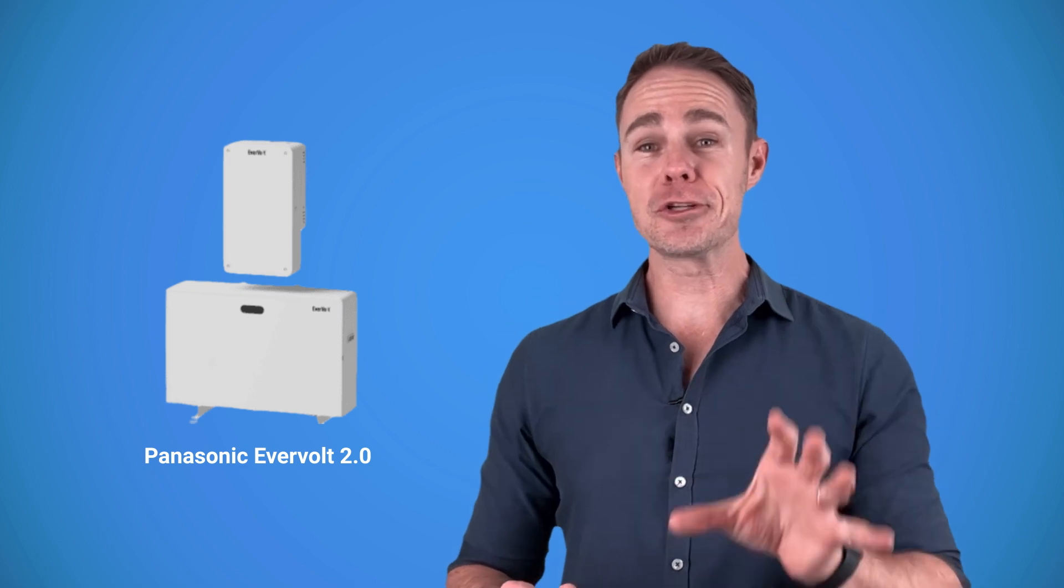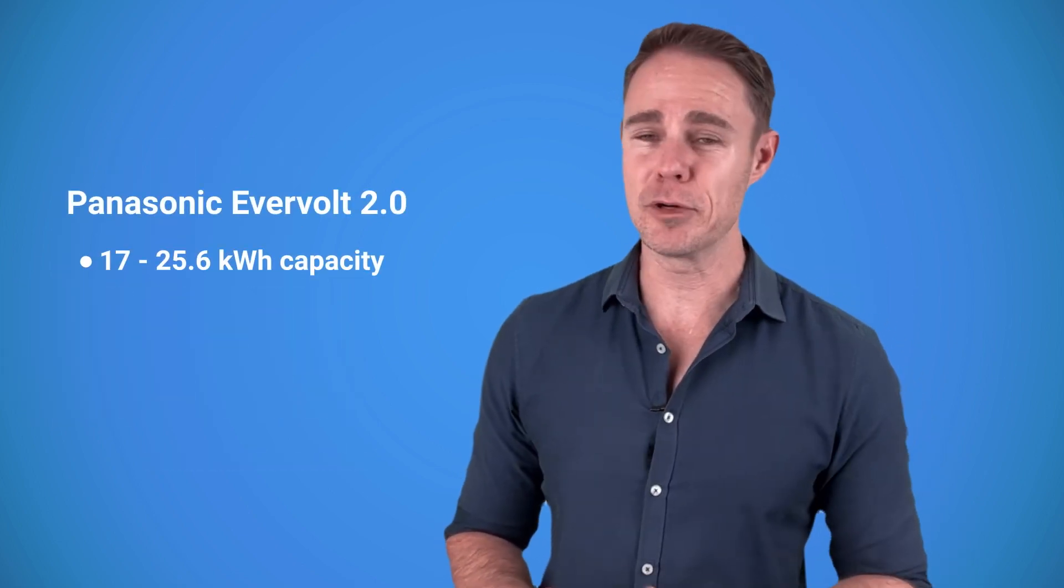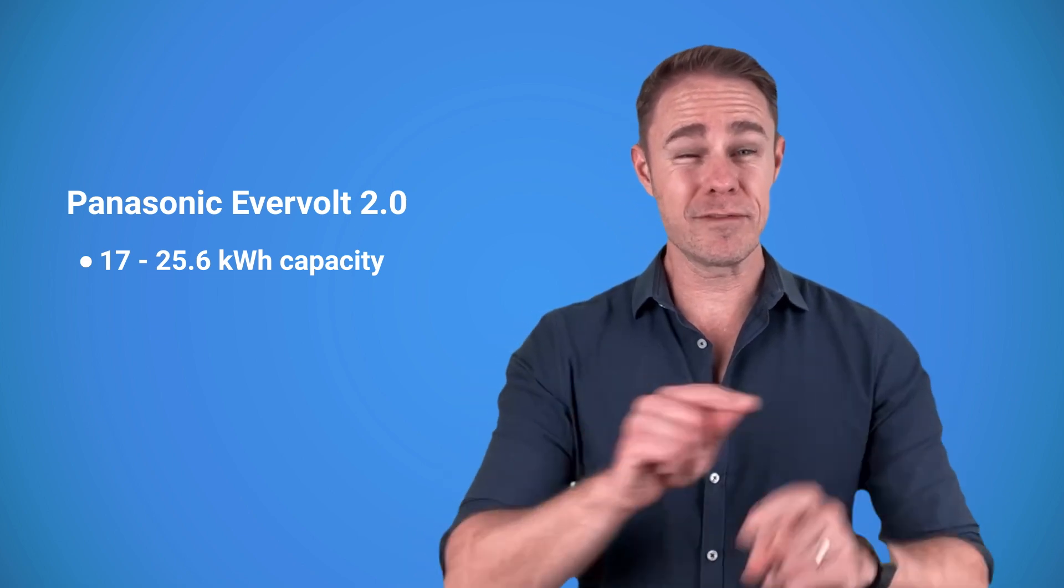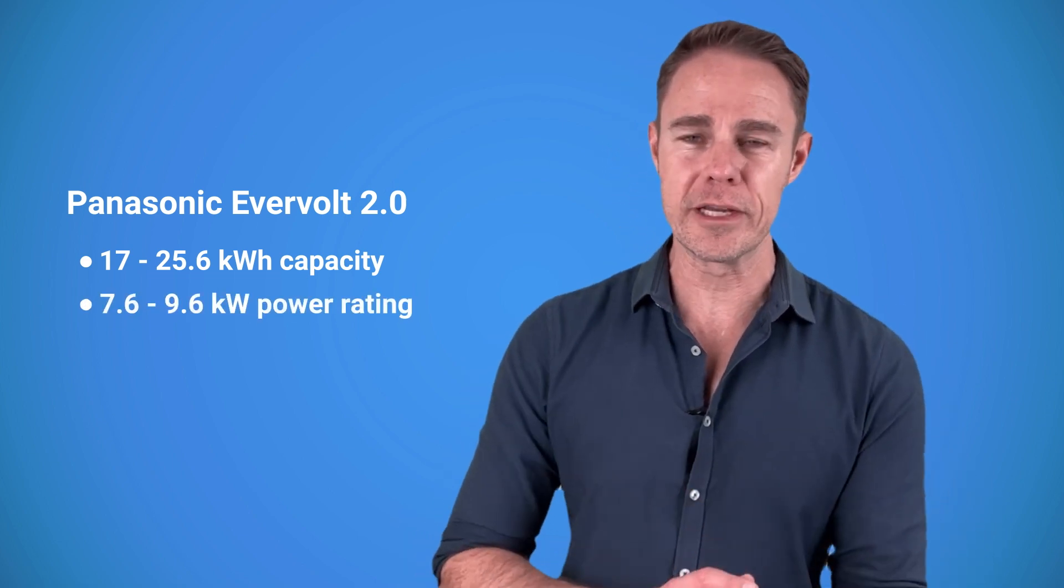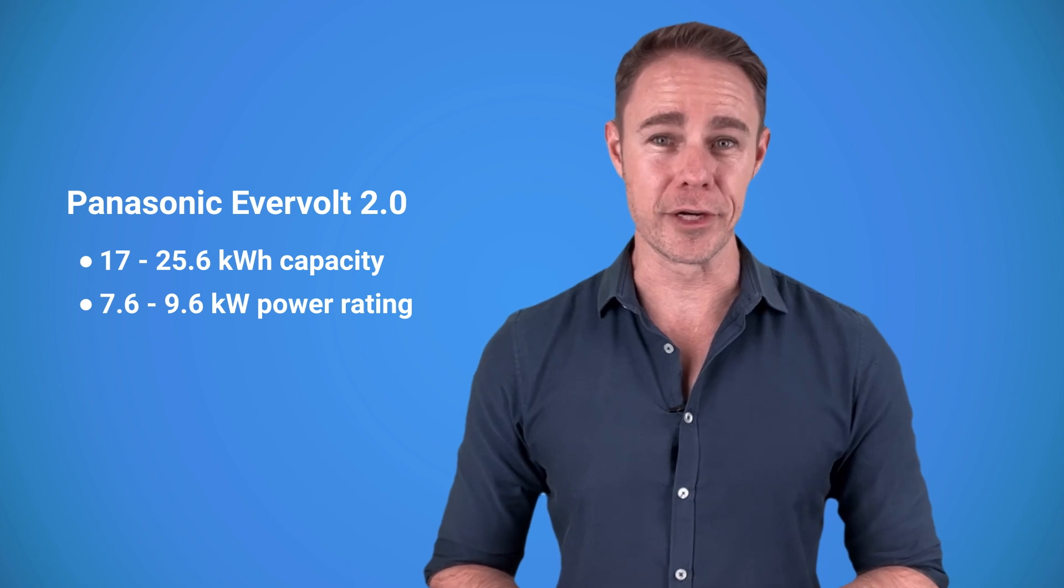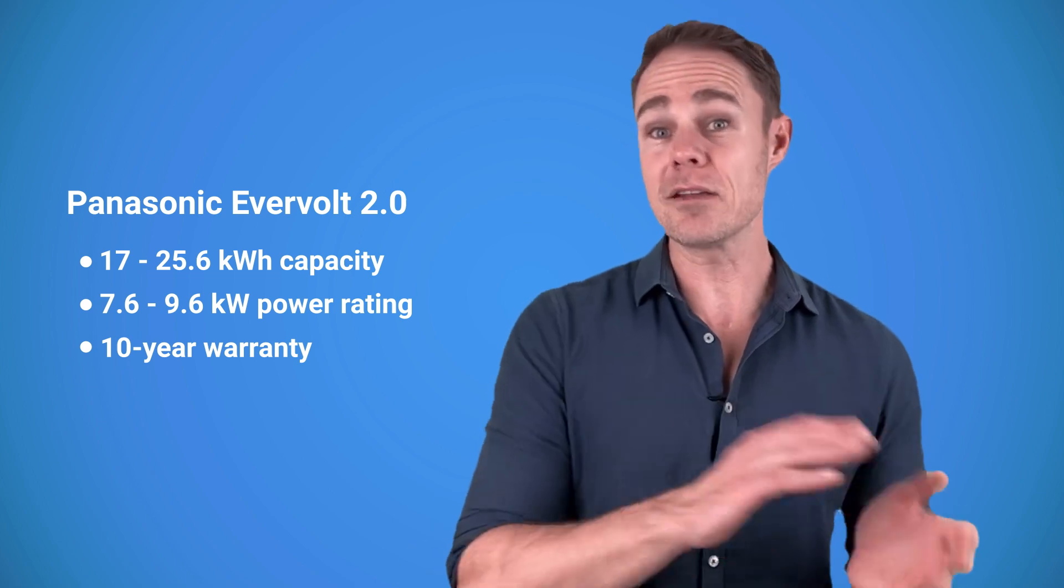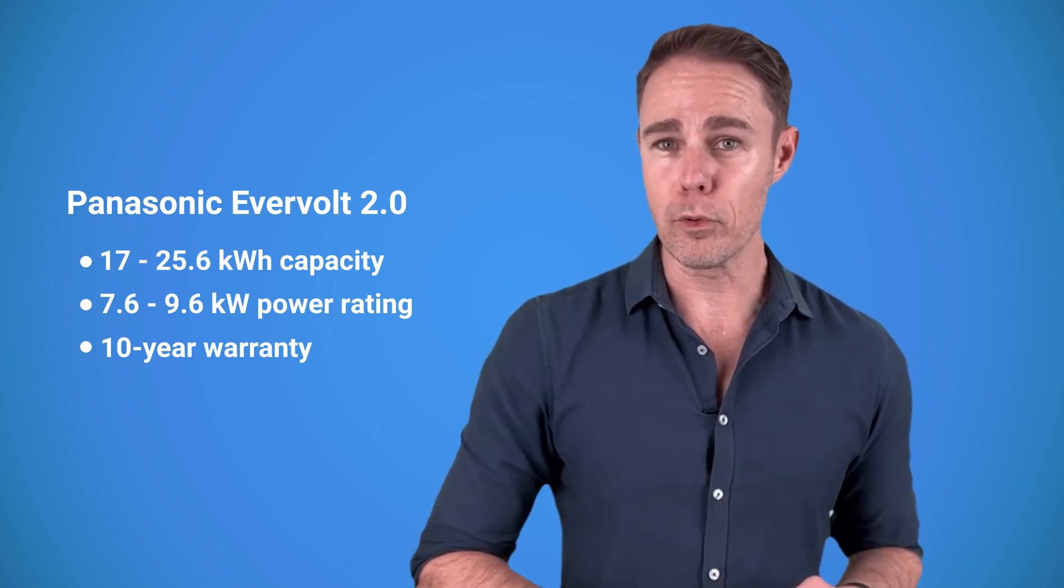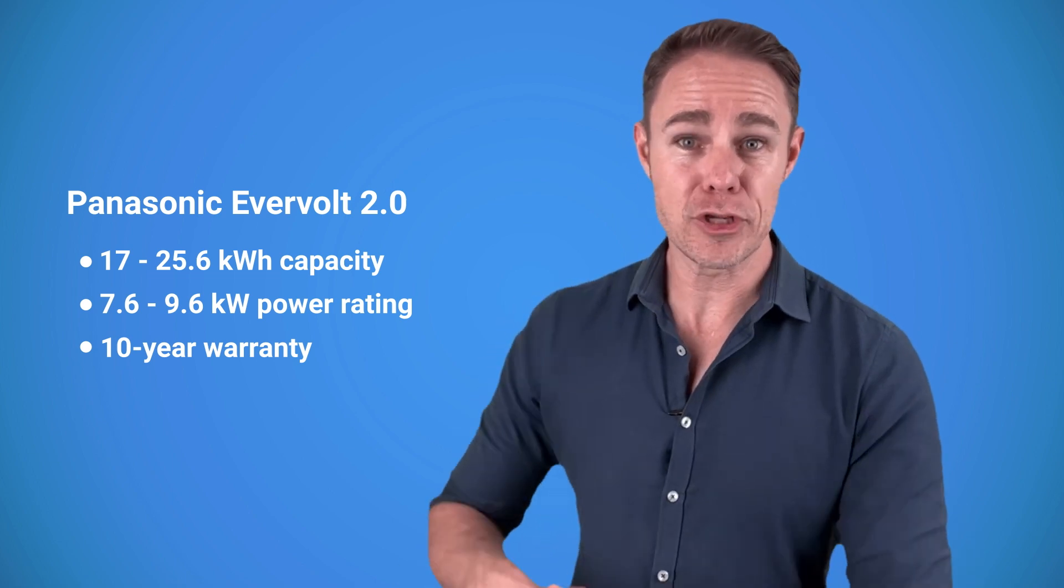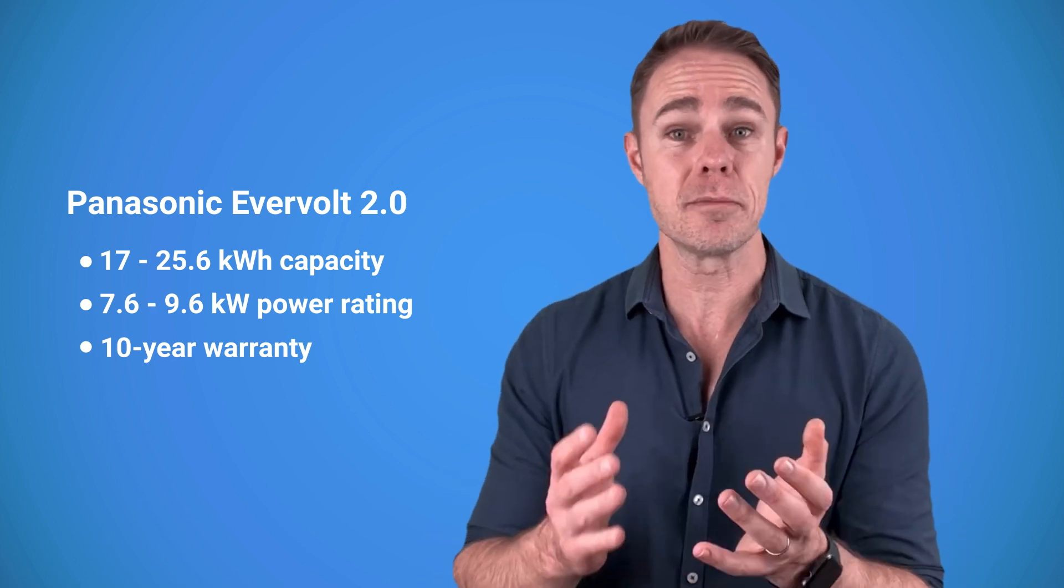Enphase software has always been very good, and the system should be easy to manage. Now the last model that I want to talk about is the Panasonic Evervolt 2.0. On the surface it looks really cool. It has a capacity from 17 to 25.6 kilowatt hours, with an output of 7.6 kilowatts off-grid and 9.6 kilowatts on-grid. Panasonic offers a 10-year warranty for it and says that it can be installed outside, unlike Evervolt 1.0.